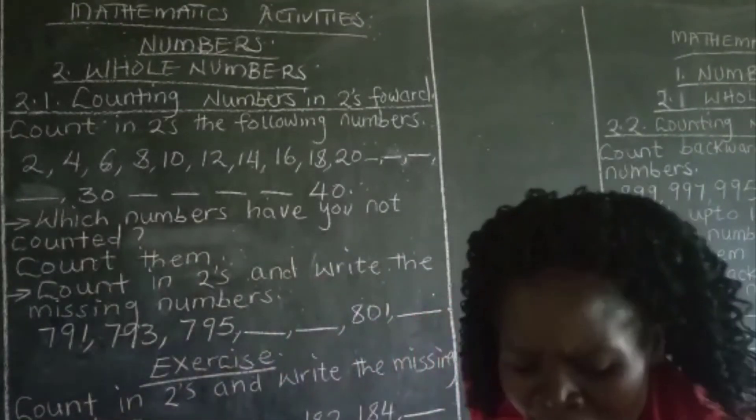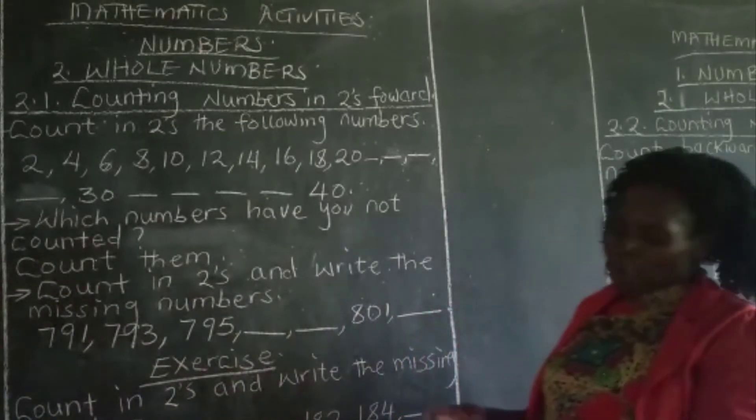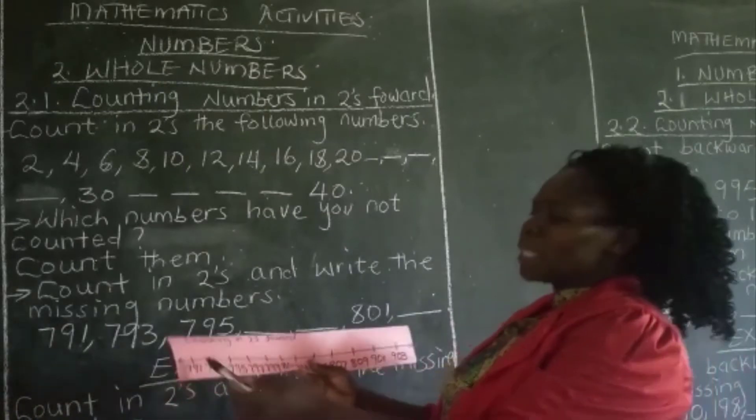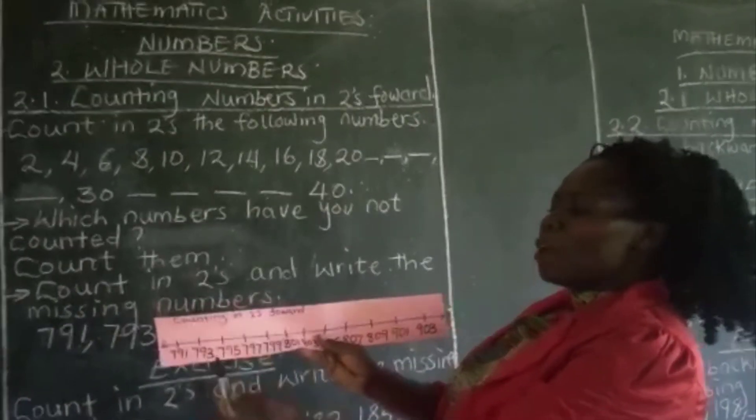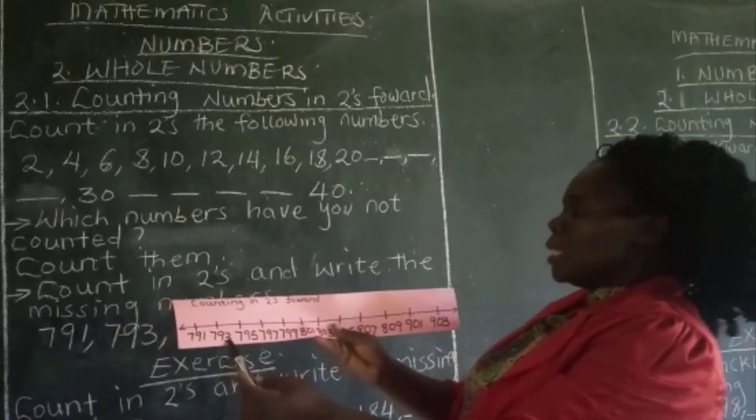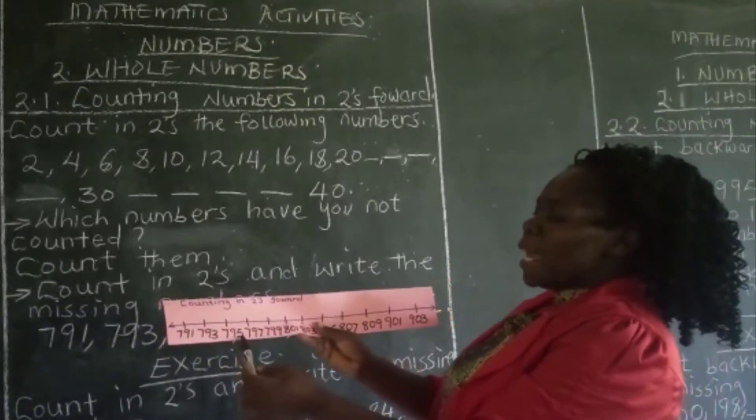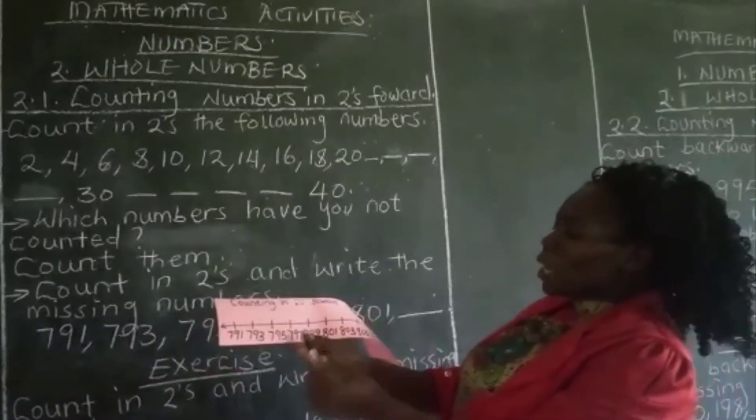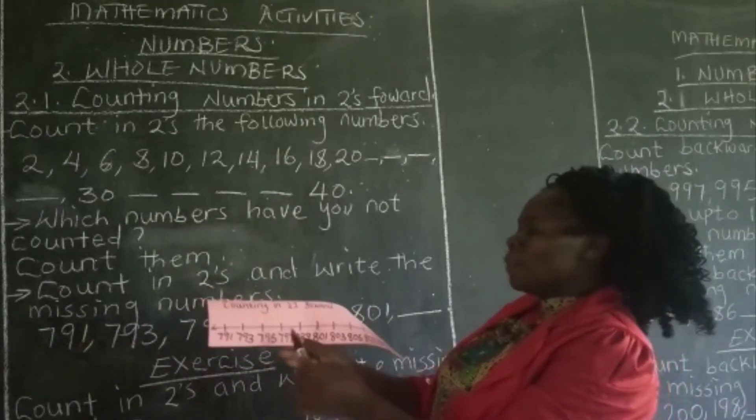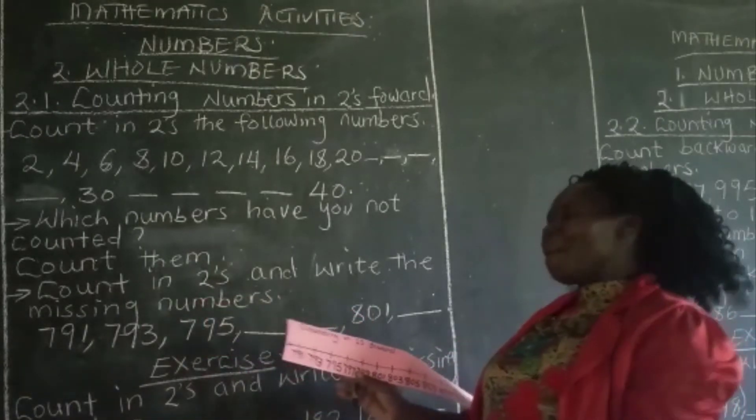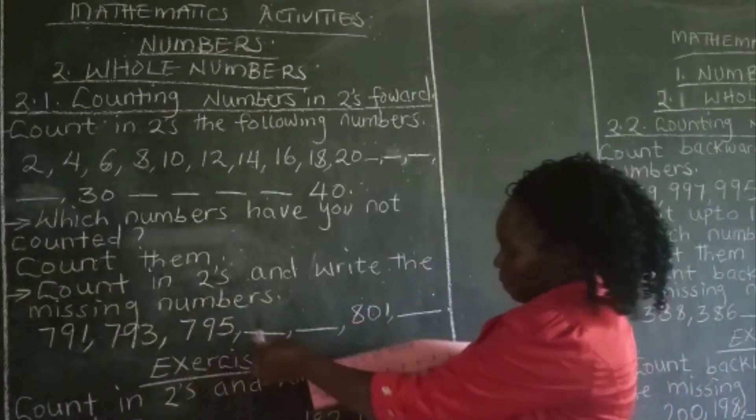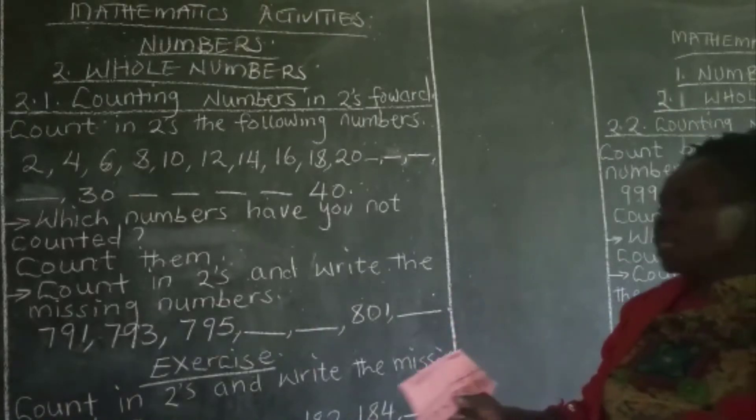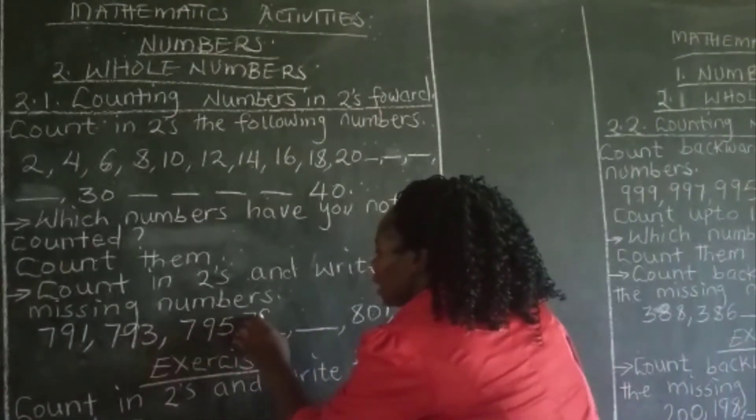So when you are counting numbers in twos, we can use a number line. We have the number line here and we have the numbers. 791 is here, we have 793, we have 795. So from 795 learners, we go to 797. So that will be our next number. That is 797, 797.